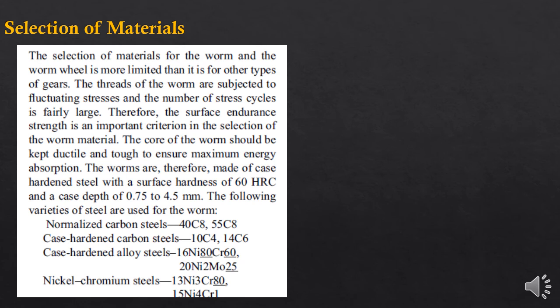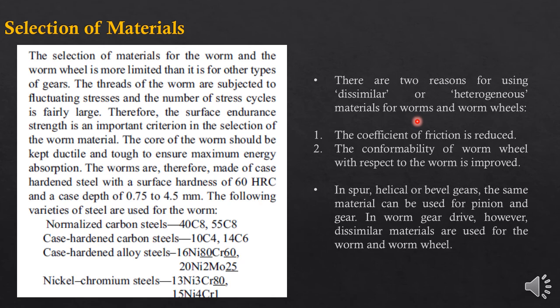In worm gears, selection of materials is important because of the friction involved. One important point: unlike other gears, here the two gears are made of dissimilar materials. In spur, helical, and bevel gears the pinion and gear are made of the same material, but that is not the case with worm gears. Using dissimilar materials will decrease friction and increase conformability.